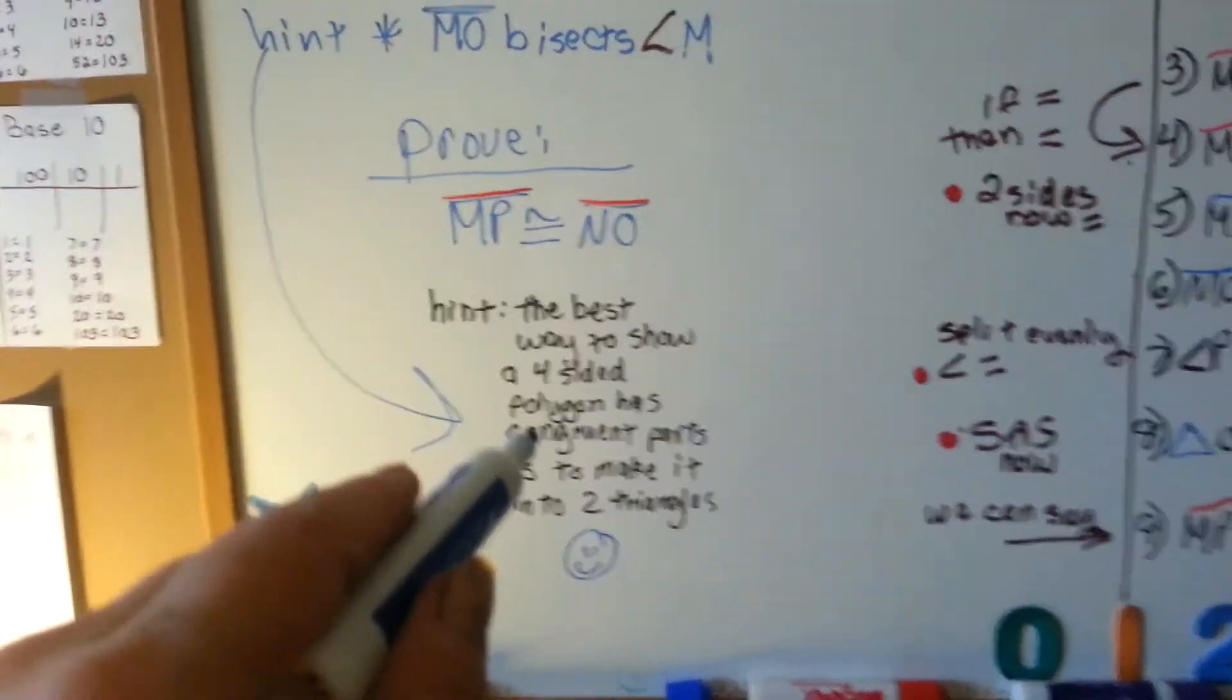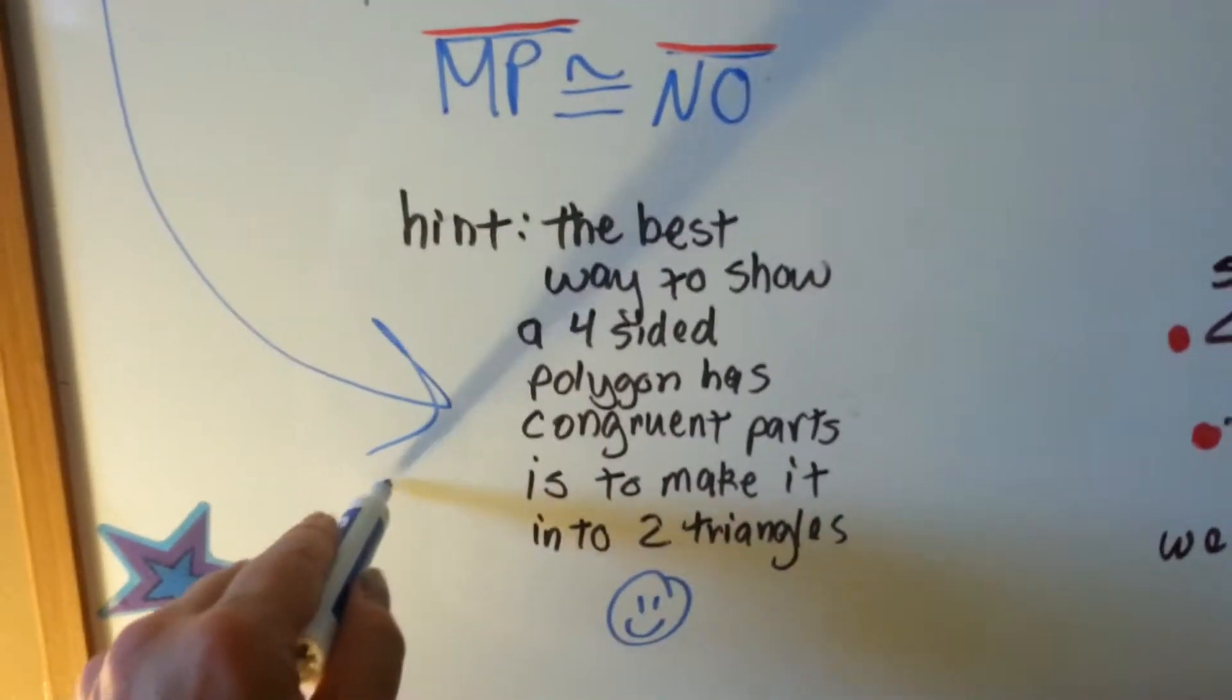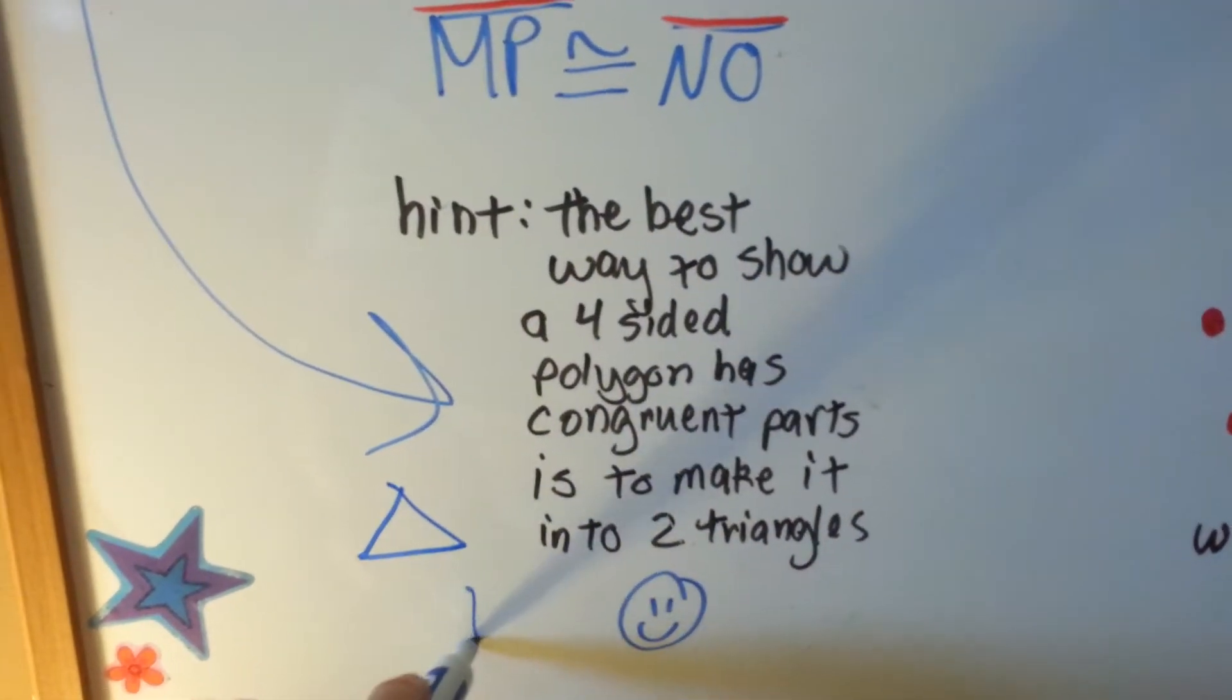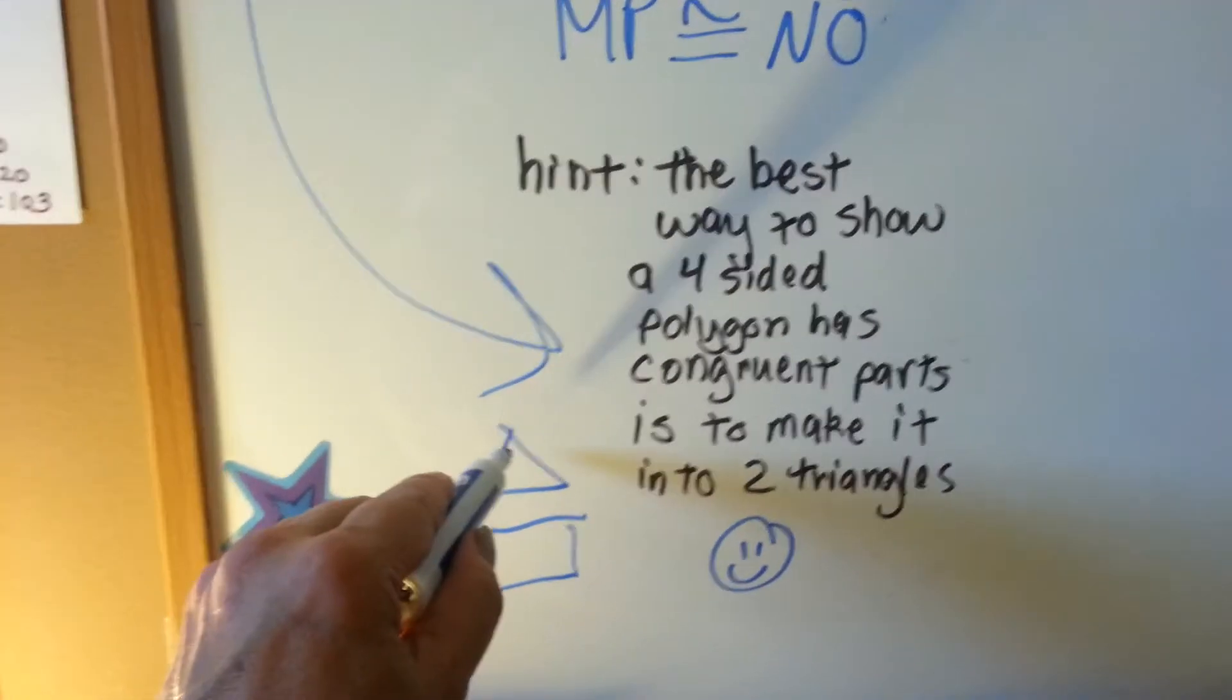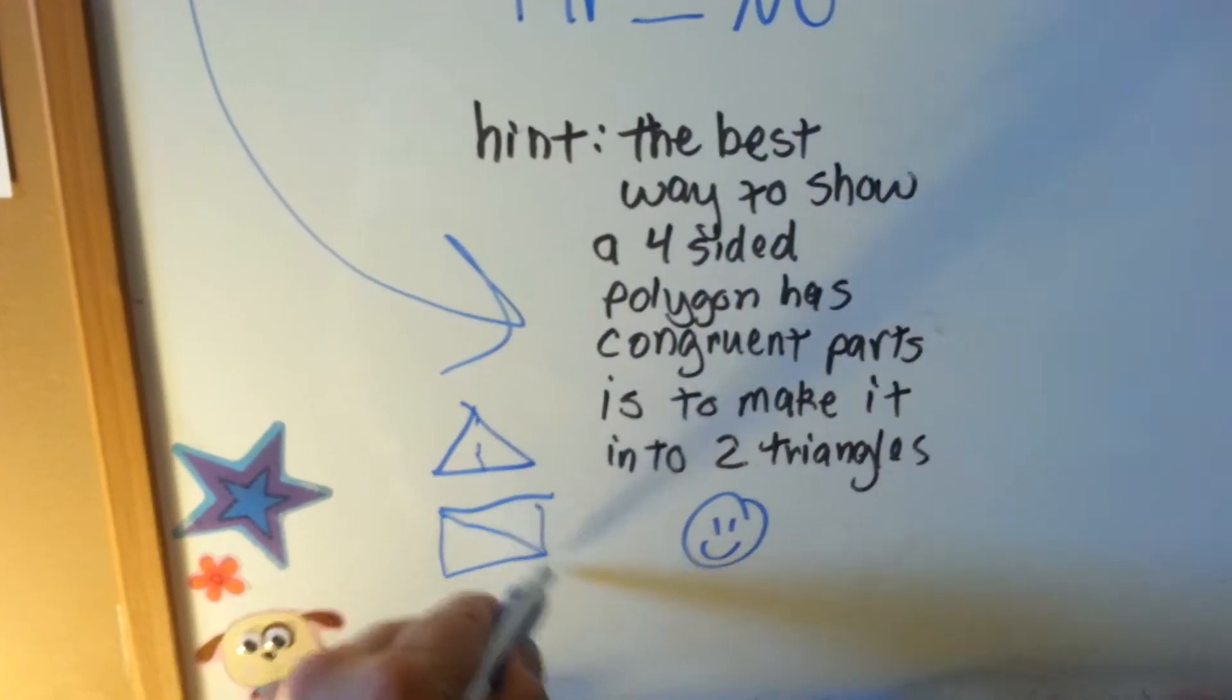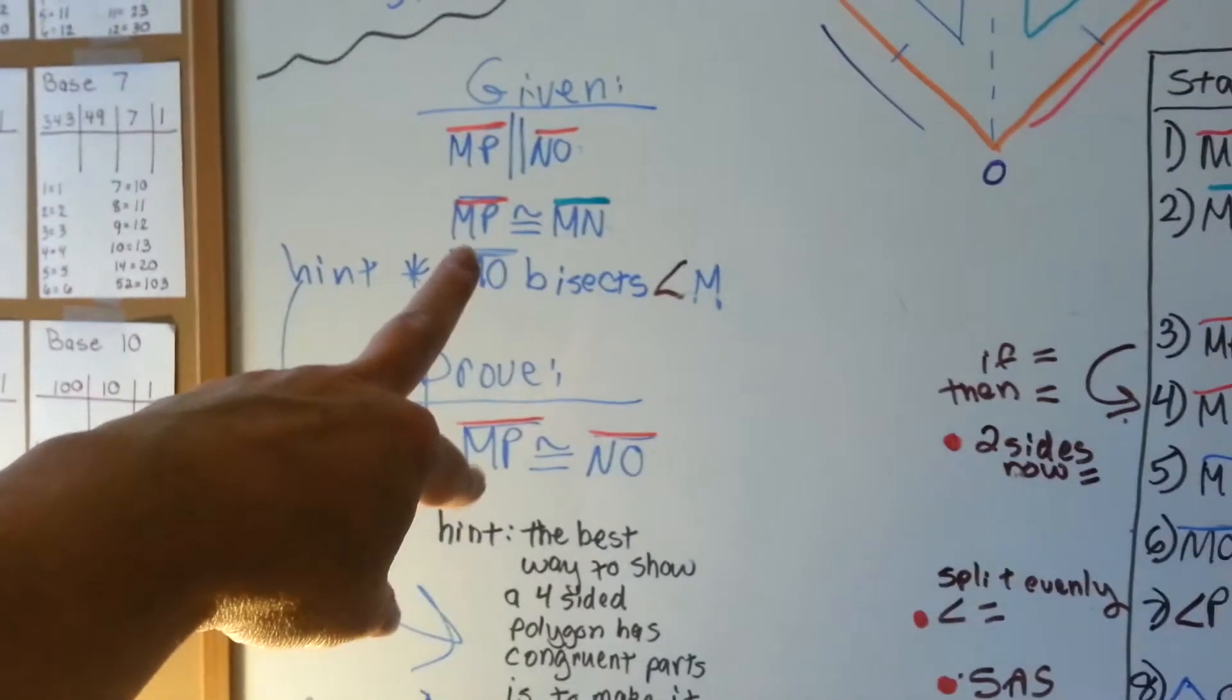Through a lot of our proofs, we've had rectangles, triangles, squares, and when we were given them, we had hints and clues like this that told us that we needed to draw lines through them.